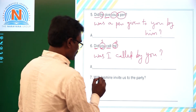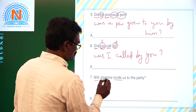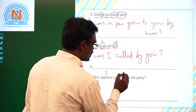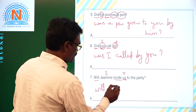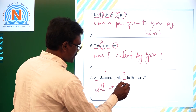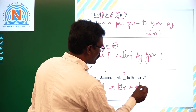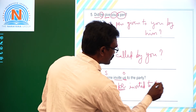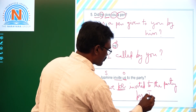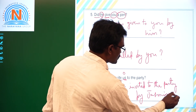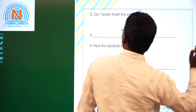Seventh one: 'Will Jasmin invite us to the party?' 'Will' is the helping verb, 'invite' is the main verb, 'Jasmin' is the subject, and 'us' is the object. Future tense uses 'will be.' Answer: 'Will we be invited to the party by Jasmin?'